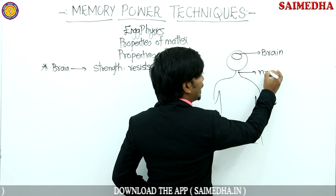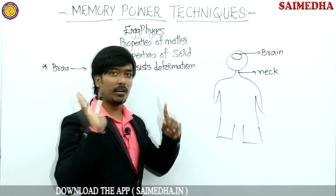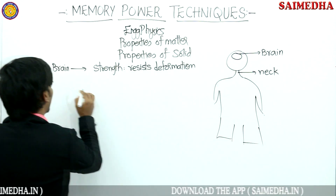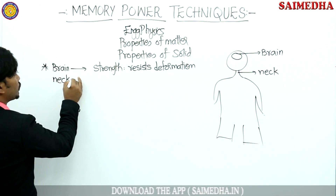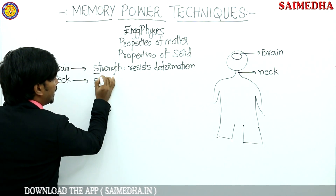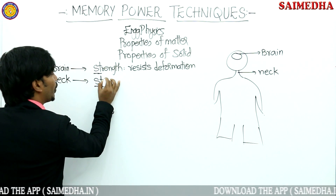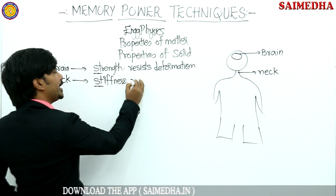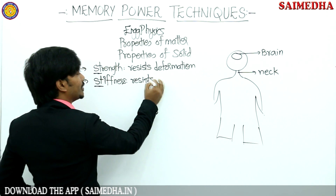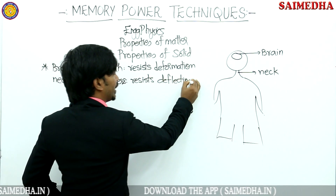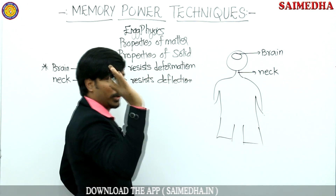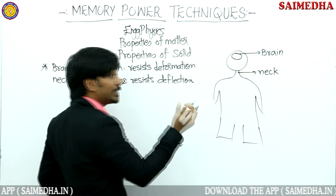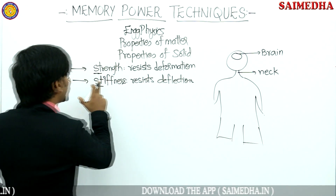The second part we are going to talk about is the neck. The neck — is it flexible or not? Yes, flexible. So the property we are going to talk about is stiffness. Stiffness is the deflection-resisting property. When you apply some load, the body is going to tilt — it is going to have some lateral displacement. That is called deflection. The ability to resist deflection is stiffness.